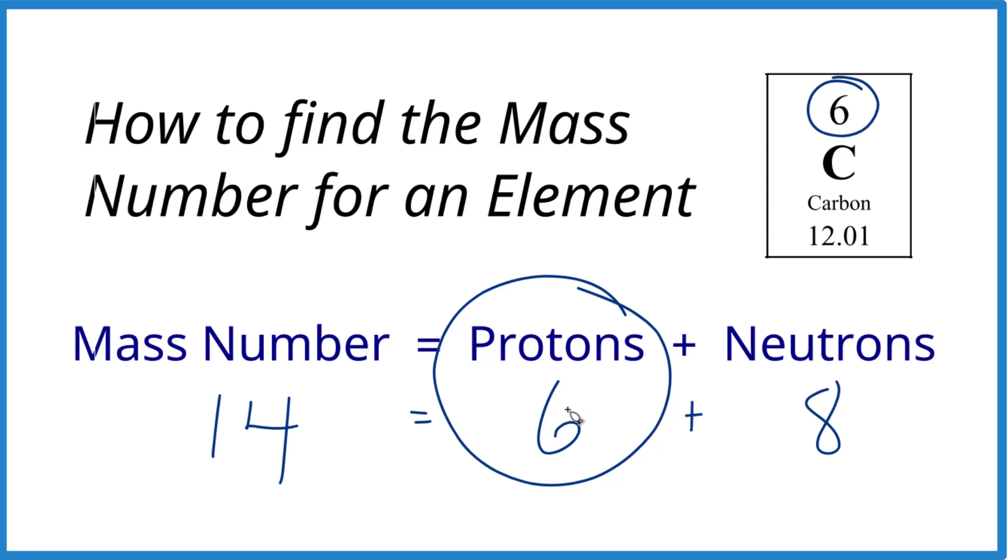So we're dealing with carbon here, and it doesn't matter if we have 6 or 7 or 8 neutrons. This will always be carbon because the number of protons equals the atomic number. That's going to be carbon. Important to know. Let's try another one.